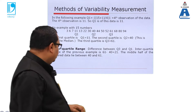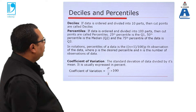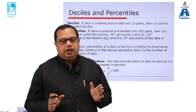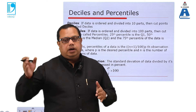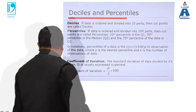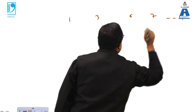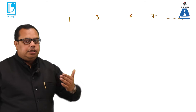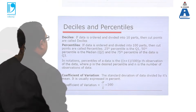Moving further, we can also calculate deciles and percentiles. A decile is defined when the data is ordered and divided into 10 parts — the cut points are called deciles. Suppose we take a dataset and break it into 10 different parts; every cut point will work as a decile.